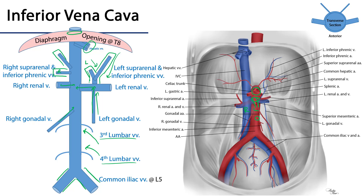whereas the first and second pairs of lumbar veins are tributaries of the azygous system, and that azygous system drains into the superior vena cava.